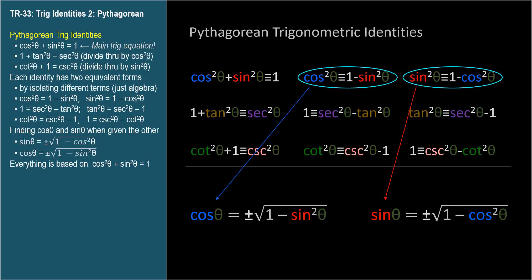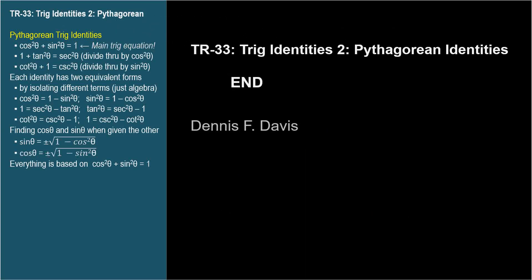This video has an accompanying Z-video, TR-33z, that shows how all six of the trig functions can be visualized on a unit circle. It includes some nice Pythagorean surprises. I think all Z-videos are interesting, but TR-33z is really special. I hope you check it out. In the next video, TR-34 will use the Pythagorean identities to solve problems and do more proofs.